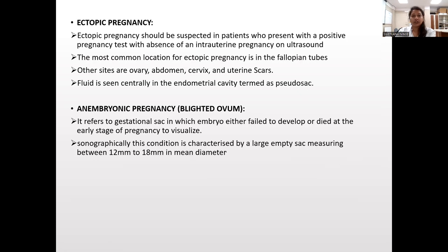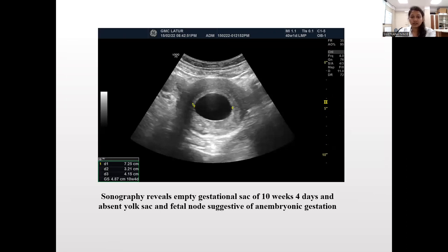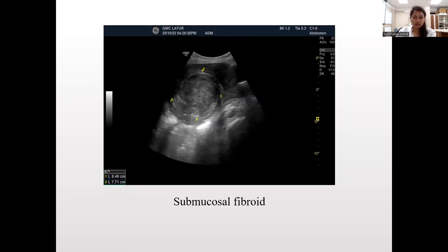Ectopic pregnancy should be suspected in patients presenting with a positive pregnancy test with an absence of intrauterine pregnancy on ultrasound. The most common location is the fallopian tube; others are ovary, abdomen, cervix, and uterine scars. Fluid can be seen in the endometrial cavity termed as pseudosac. Anembryonic pregnancy, or blighted ovum, refers to a gestational sac in which the embryo either failed to develop or died at an early stage; sonographically it is characterized by a large empty sac measuring 12 mm or more. This transabdominal sonogram of a patient presenting with PV bleeding shows a right adnexal mass with color Doppler demonstrating a cystic thick-walled mass with ring of fire sign, suggestive of ectopic pregnancy. Another image shows an empty gestational sac at 10 weeks with absent yolk sac and fetal pole, suggestive of anembryonic gestation. Another image shows a submucosal fibroid lying in the endometrial cavity.